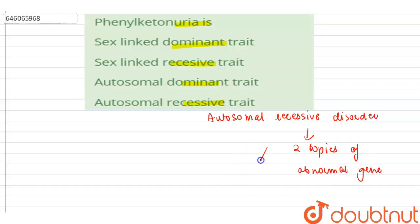Both parents must pass on a non-working copy of the gene in order for a baby to have the condition. Babies with PKU, which is phenylketonuria, are missing an enzyme.